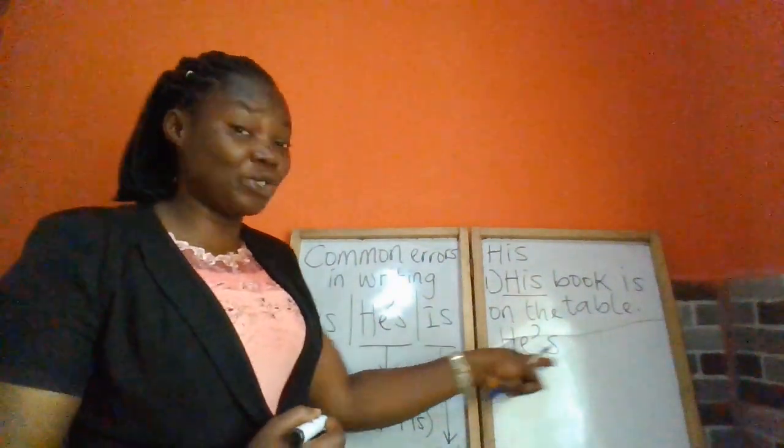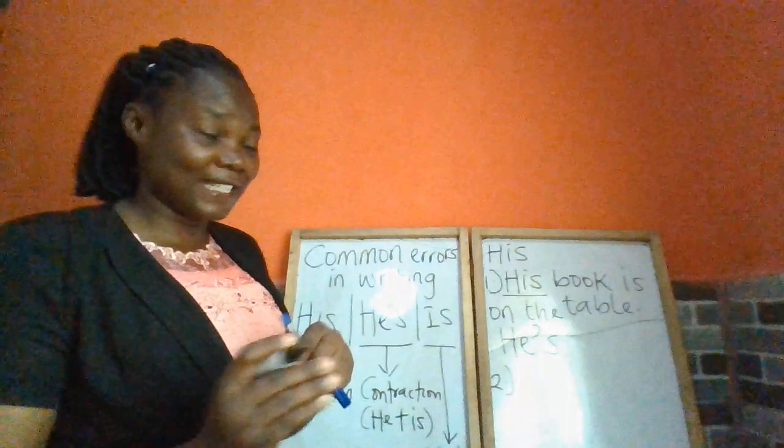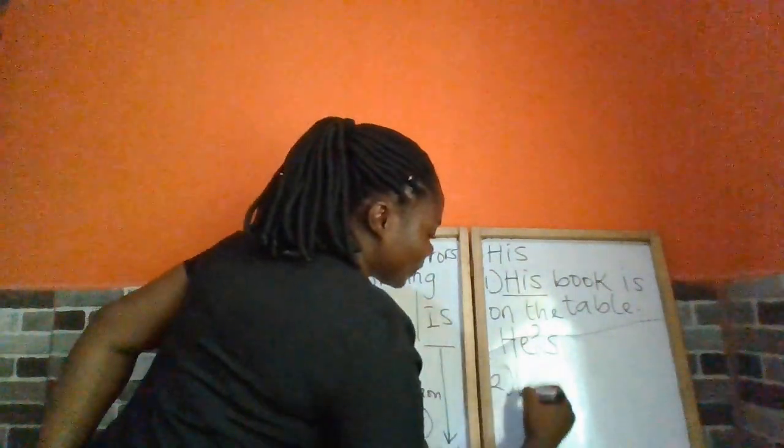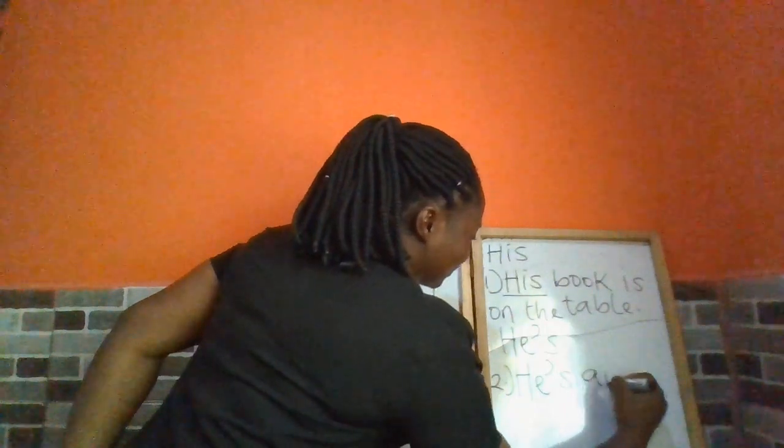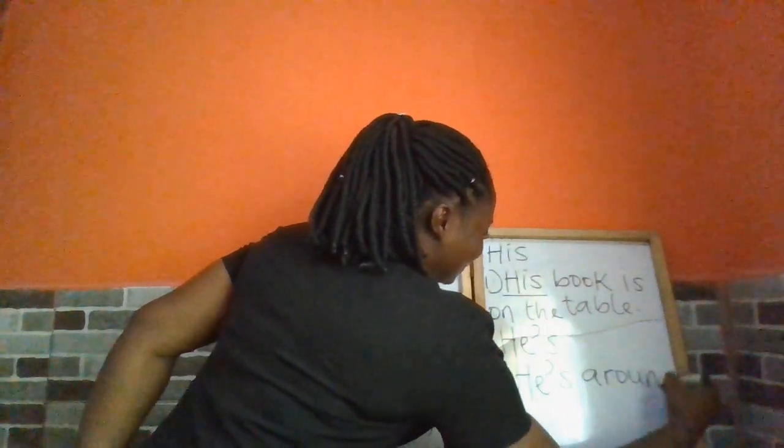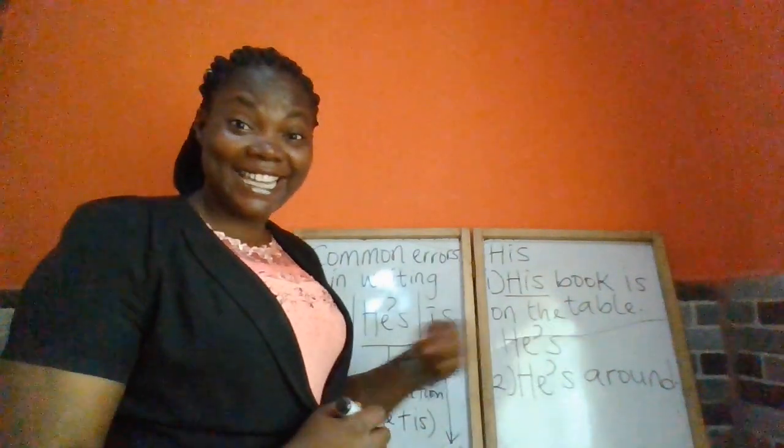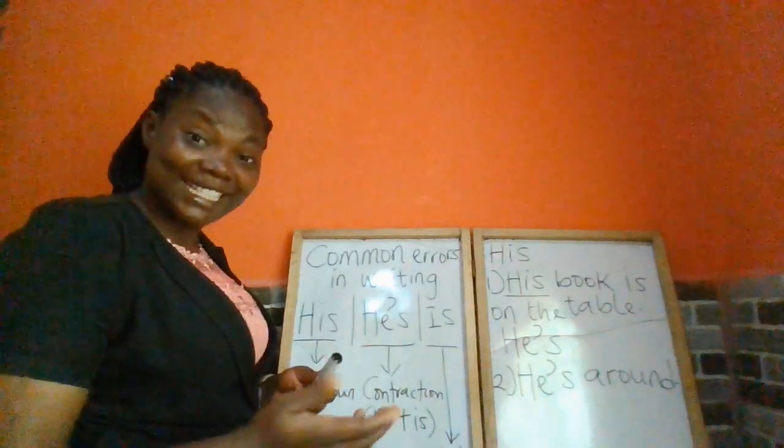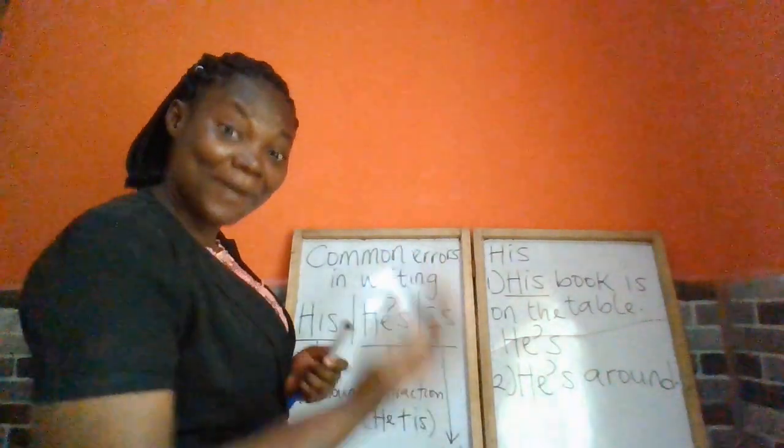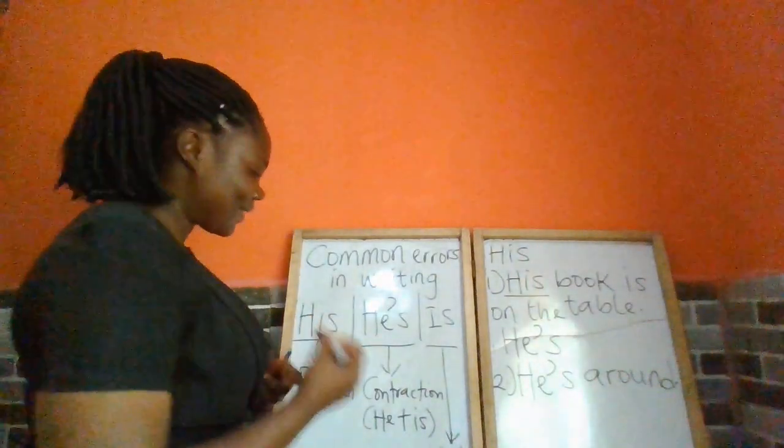Don't forget he's is a contraction, a combination of he and is. He's around. He's around. That is, he is around. He's around.